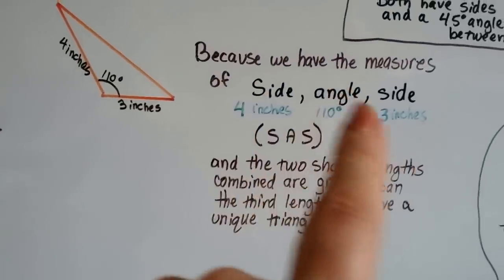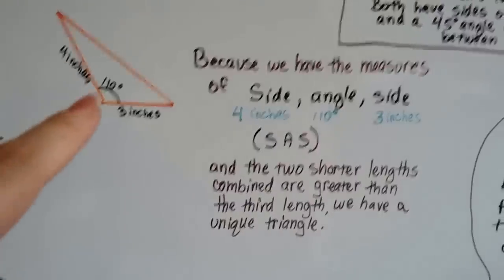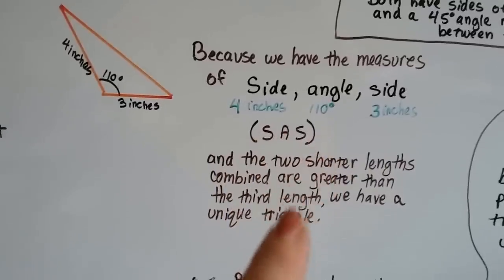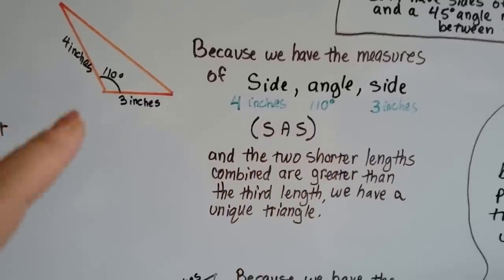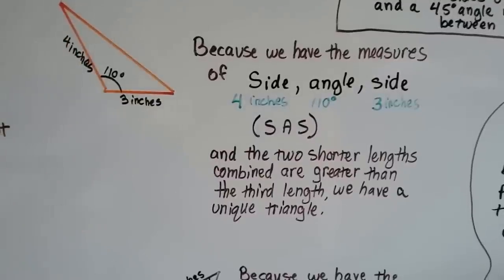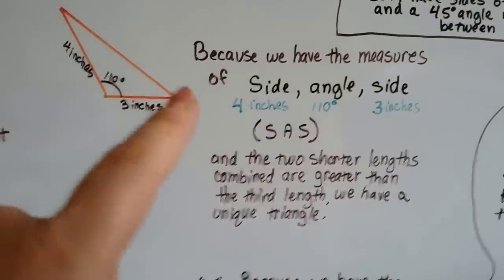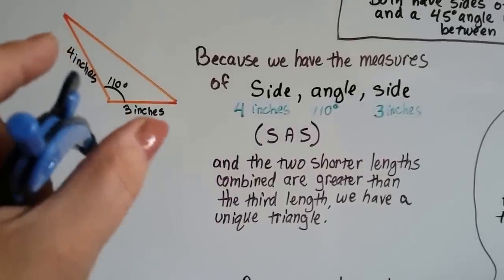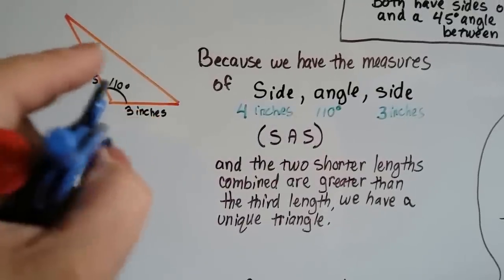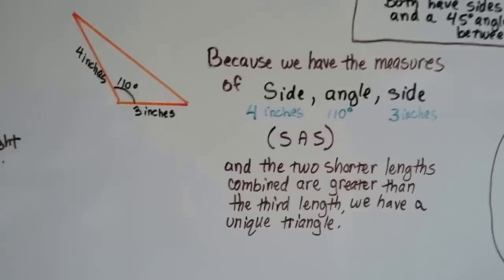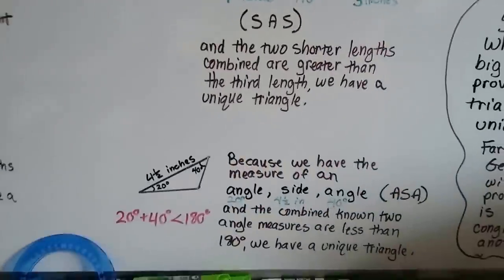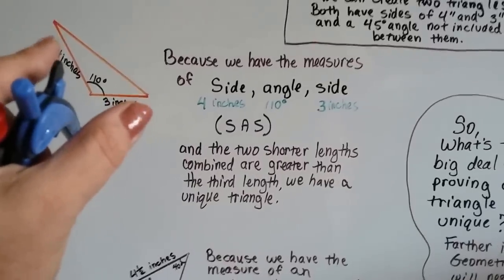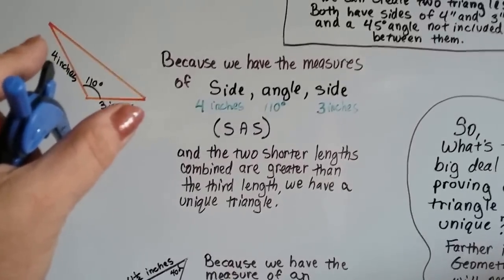For side-angle-side (SAS): four inches, angle 110 degrees, three inches. The combined two shorter lengths — four inches and three inches — are longer than the third side, so we know it's a unique triangle. The 110-degree angle helps prove that they are longer together.